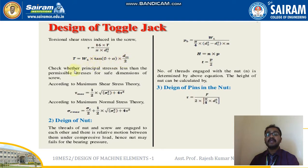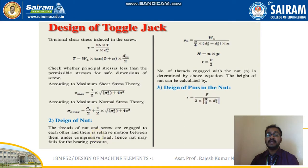Check whether the principal stress is less than the permissible stress for safe dimensions of the screw. By maximum shear stress theory: τ_max = ½ × √(σC² + 4τ²). By maximum normal stress theory: σC_max = σC/2 + ½ × √(σC² + 4τ²) — the same equations as for the screw jack. For the nut design in the toggle jack, the nut may fail by bearing pressure: PB = W1 / [(π/4)(DO² − DC²) × N], H = N × P, and t = P/2. The number of threads engaged is determined from these equations and the height of the nut is calculated accordingly.